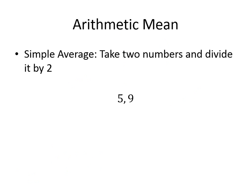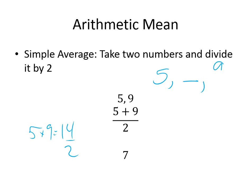Arithmetic mean is the average of two numbers — pretty straightforward. You take the two numbers, add them together, and divide by 2. So the arithmetic mean of 5 and 9 would be 5 plus 9 equals 14, divided by 2, which gives you 7. It tells you the number that could be between two terms in a sequence — so if you have 5, unknown, 9, the missing term is 7, giving you 5, 7, 9.